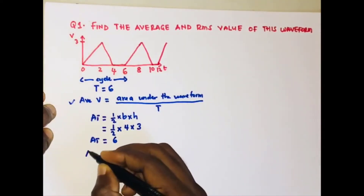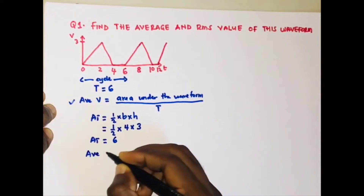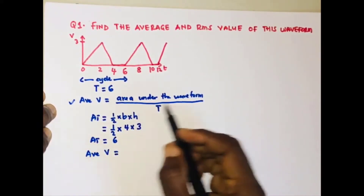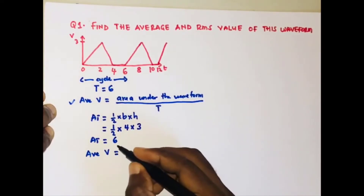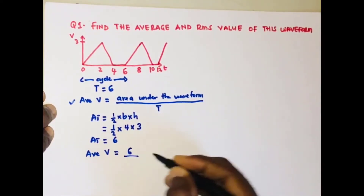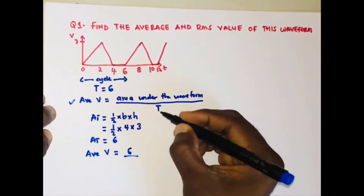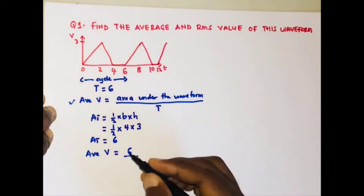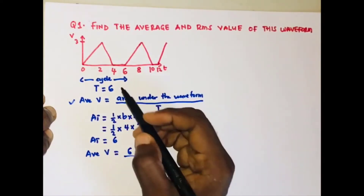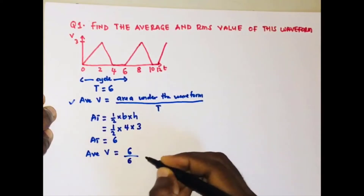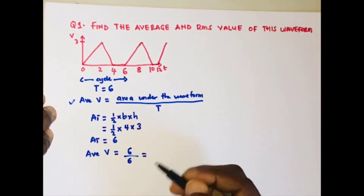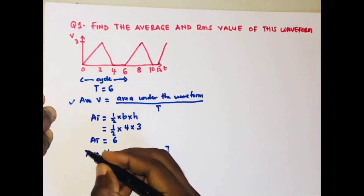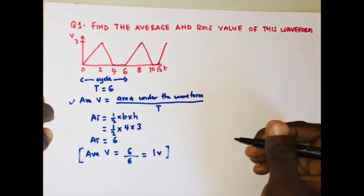To find the average value, we divide the area of the figure, which is 6, by the period of the signal, which spans from 0 to 6, so the period is 6. Therefore 6 divided by 6 equals 1. So the average value of this waveform is 1.